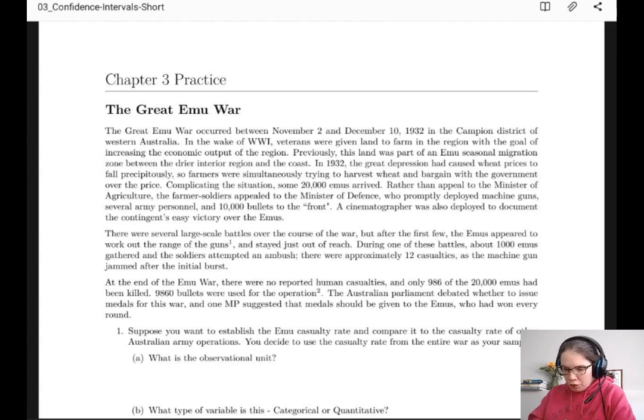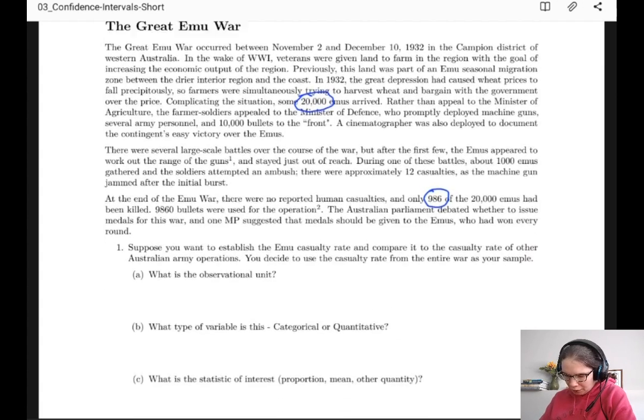For those of you who don't know, the Great Emu War was a campaign in Western Australia to try to take out some emus that were eating all of the wheat that the farmers had planted. You can read the problem description for yourself. But the important parts here: we have some 20,000 emus and we have 986 of the 20,000 emus that were killed. We've also got some extra information about bullets that we don't really need.